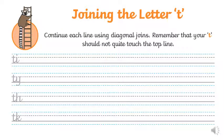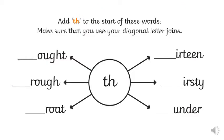To begin with, start with your handwriting. We're looking at the letter T today. So if you can, have a go. Continue using the lines on your page and can you have a go at these four joins? This time now you've got six words. Can you add the TH to the start of these words? Make sure that you use your diagonal letter joins. Pause the video and have a go.